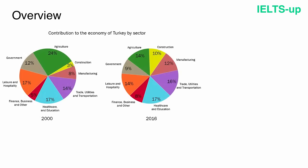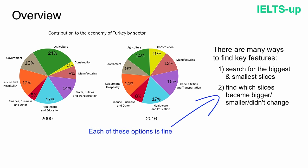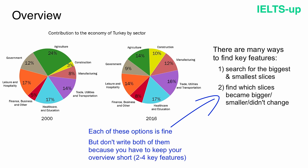Let's look at our pie charts and identify some key features. There are many ways to find them. First, we could search for the biggest and smallest slices of each pie chart. Second, we can find which slices became bigger, smaller, or did not change. Each of these options is fine, but do not write both of them in the overview — you need to keep it concise. I've decided to focus on the first option.